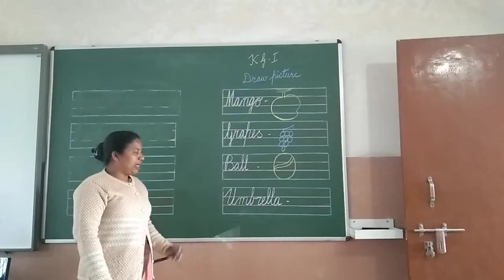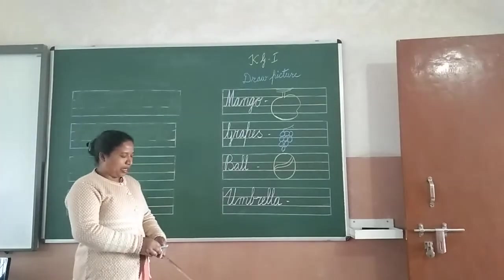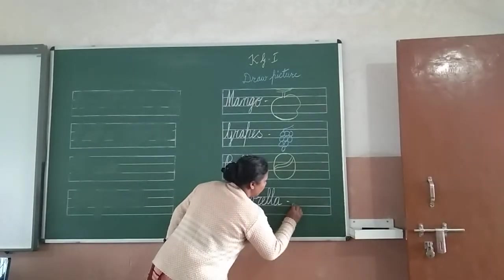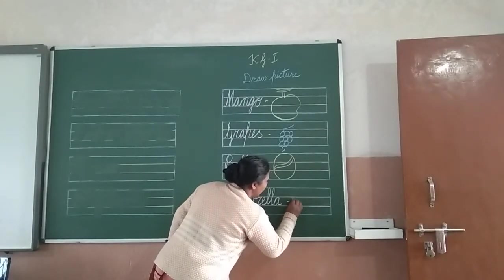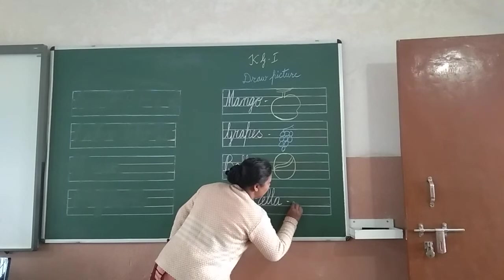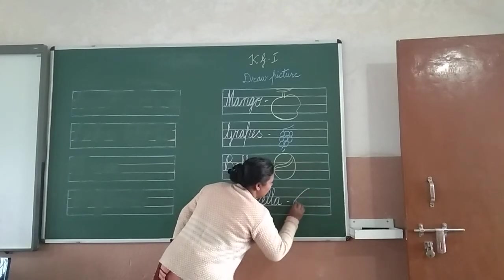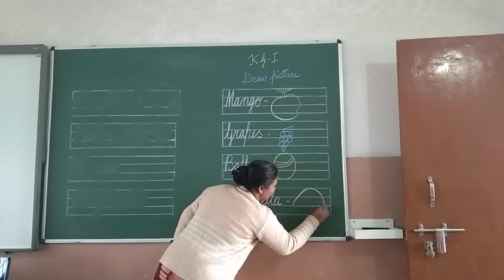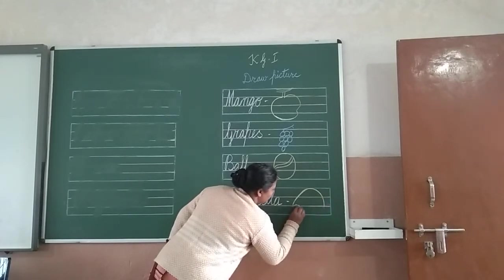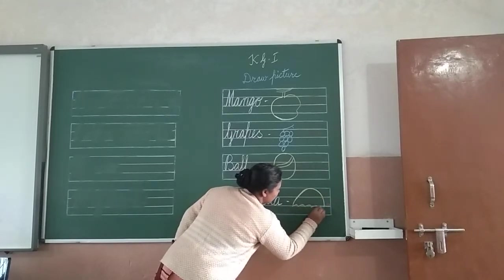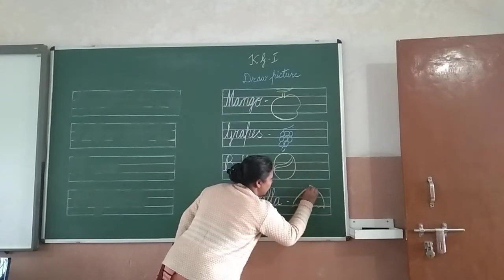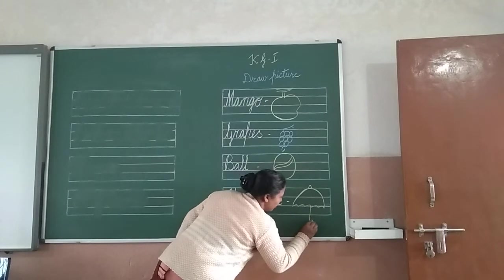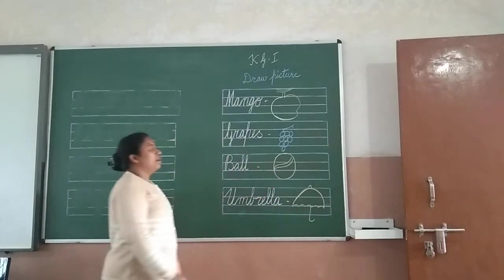That umbrella. Umbrella. Picture of umbrella. How do you make umbrella? You will draw like this line. Okay. From here, from the third line, draw like this. And then come down like this. And then here you will make like this. You have seen the umbrella. And here you will do like this.